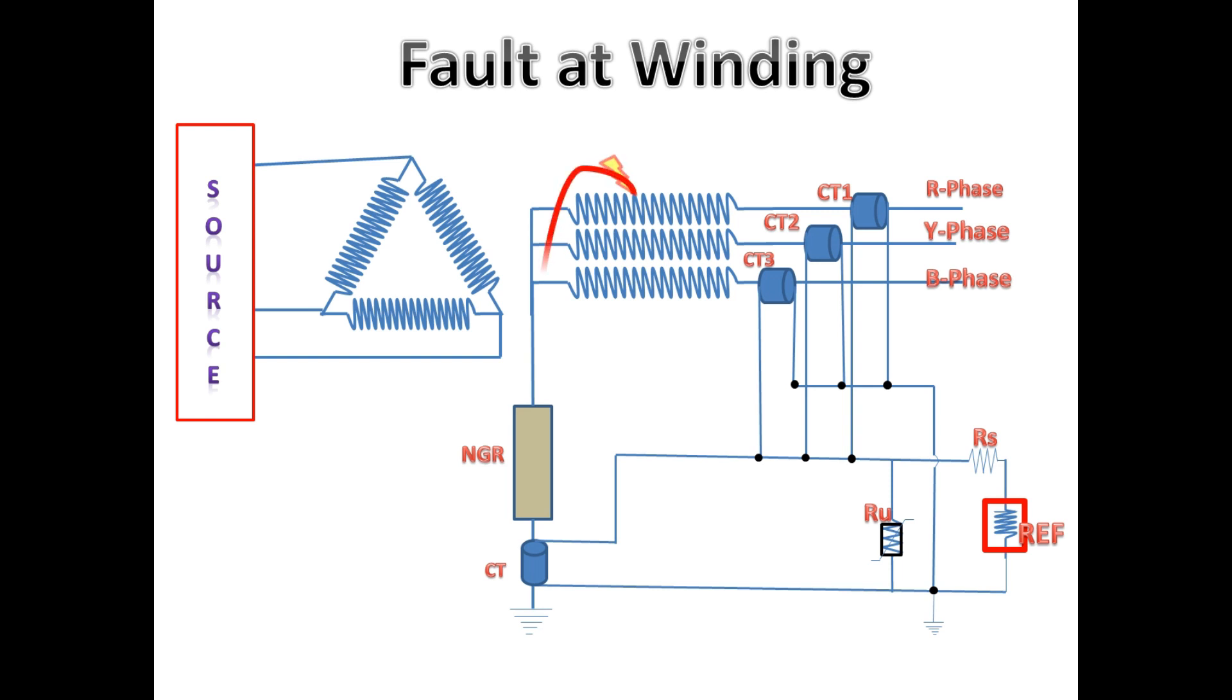Due to the presence of NER or NGR on the neutral point, it will reduce the current. This will be sensed with neutral CT, and according to coordination with core balance CT, the REF protection will be operated depending on relay settings.